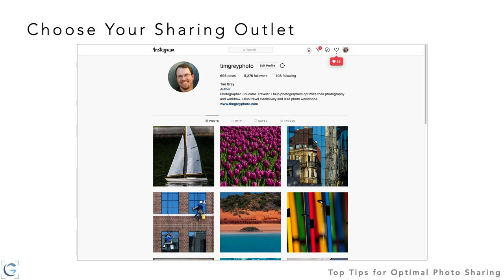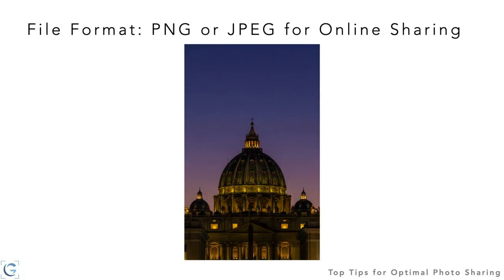When sharing online, generally save images as a JPEG — the most common format — or as a PNG (Portable Network Graphics). If the sharing method supports PNG, I would say it is superior because it does not have lossy compression, giving better image quality versus JPEG. The file size is a little larger than a JPEG, but the image quality is better.